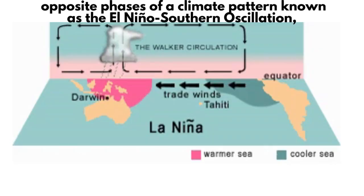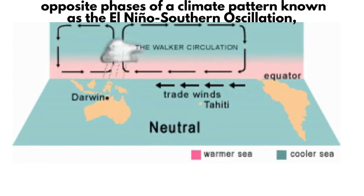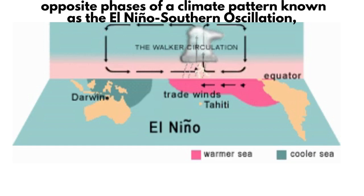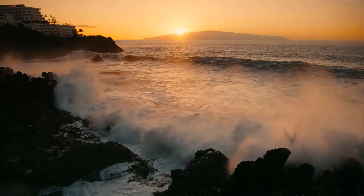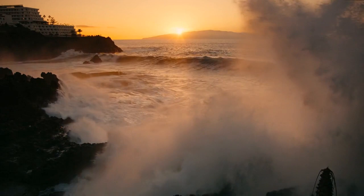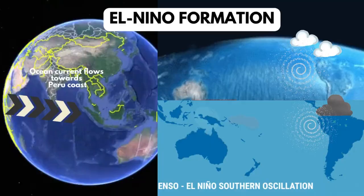To start off, let's clarify what ENSO actually means. These are opposite phases of a climate pattern known as the El Niño Southern Oscillation, or ENSO for short. When ocean currents are flowing towards the west, it is La Niña; when ocean currents are flowing towards the east towards the Peru coast, it is known as El Niño. ENSO is a naturally occurring phenomenon that involves the interaction between the ocean and the atmosphere in the tropical Pacific Ocean.